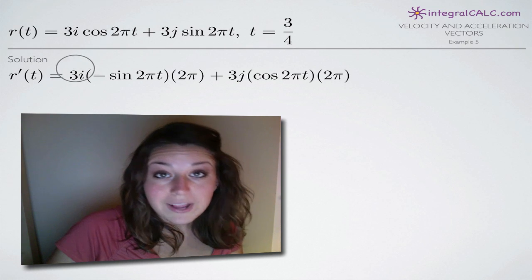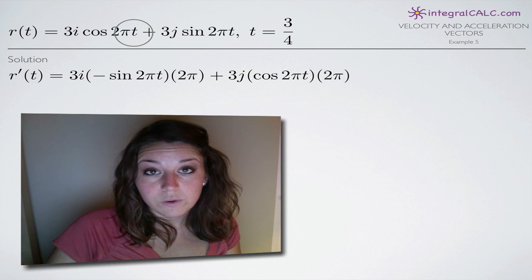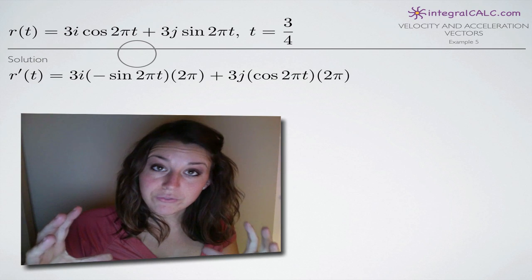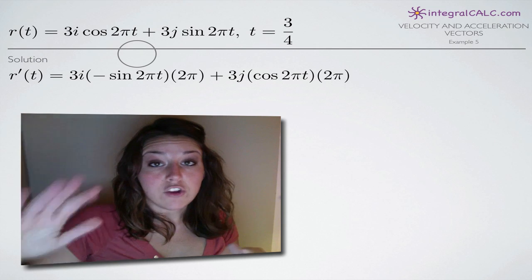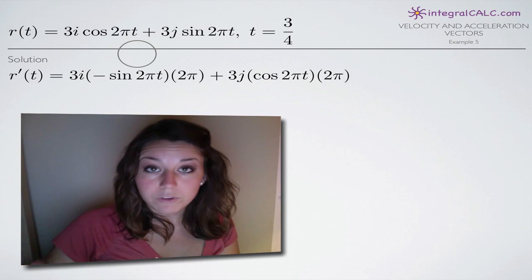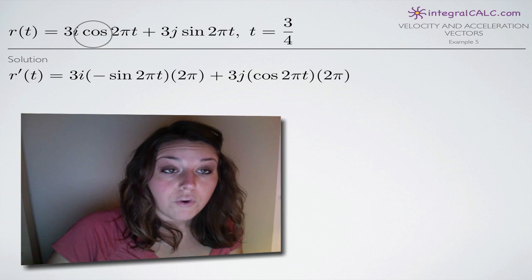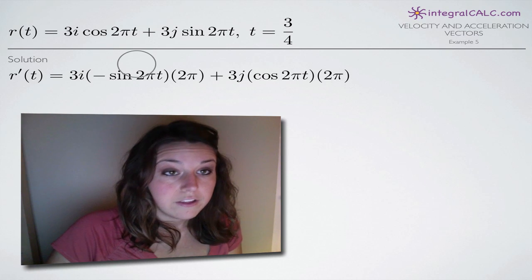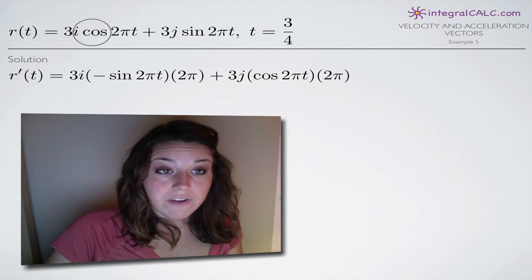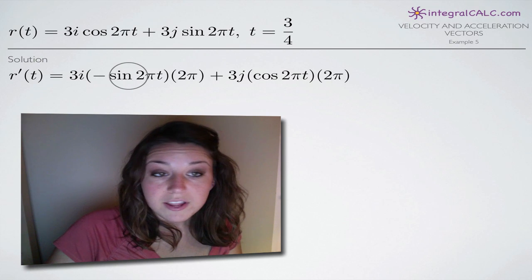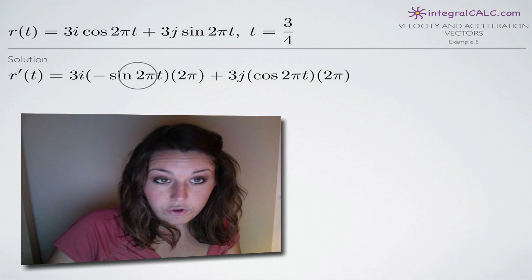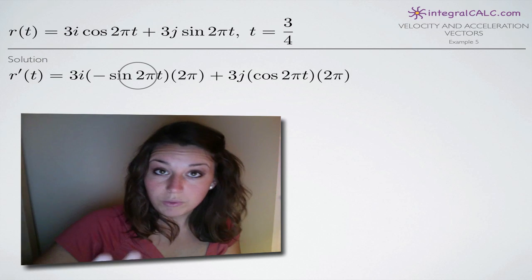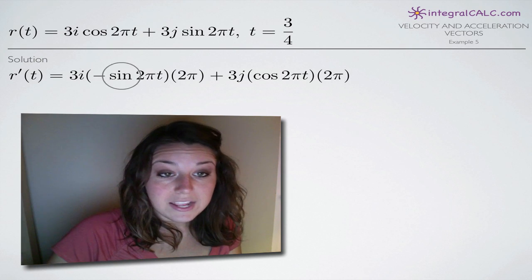This 3i is going to stay right where it is, and then cosine of 2 pi t we're going to evaluate with chain rule. Chain rule says we look at the outside function first, take the derivative of that ignoring the inside function completely, then multiply by the derivative of the inside function. Our outside function is cosine and our inside function is 2 pi t. The derivative of cosine is negative sine, so we get negative sine of 2 pi t — we leave 2 pi t alone.